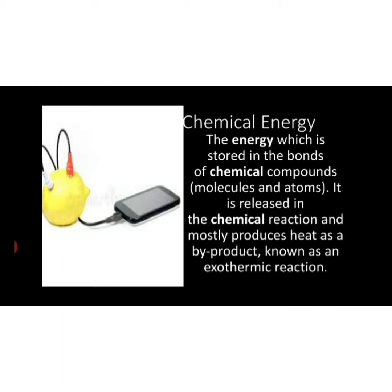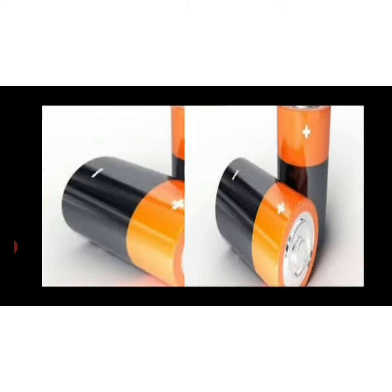Chemical energy mostly produces heat as a byproduct — this is known as an exothermic reaction. Byproduct means material which comes out after any chemical reaction. Exothermic means a chemical reaction in which heat gets produced — we can feel the temperature outside. That kind of reaction is an exothermic reaction. Now we'll see what are the sources of chemical energy. You can see batteries over here — batteries are one source of chemical energy.